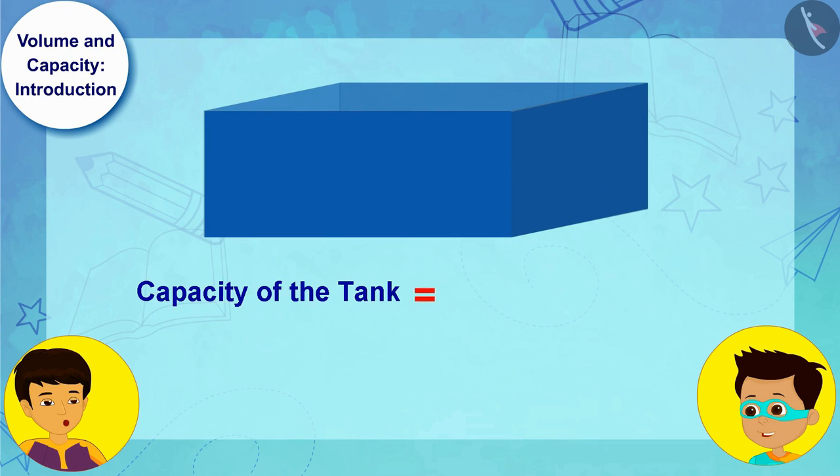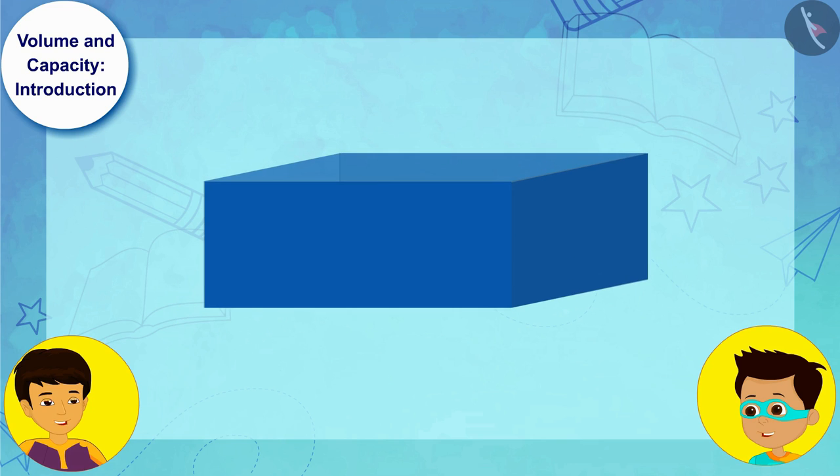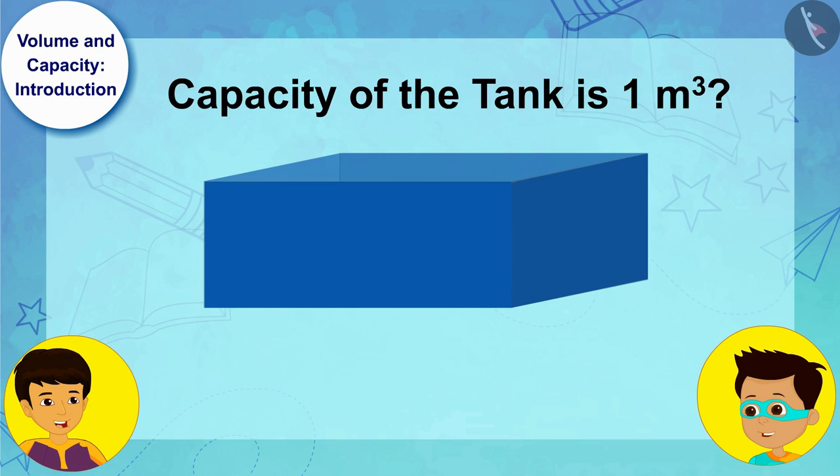Thus, the amount of water you can fill in the tank is equal to its volume. So can we say that the capacity of the tank is 1 meter cube?